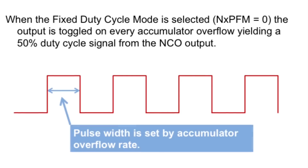The pulse width of the output waveform is set by the accumulator overflow rate. Each overflow changes the output state from low to high or high to low. By changing the accumulator increment value, you can alter the pulse width and therefore the frequency on every overflow. The NCO module has an interrupt option to make this easier to automate.